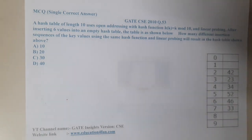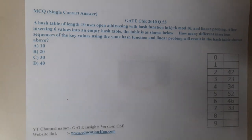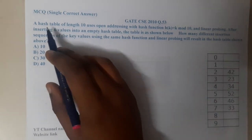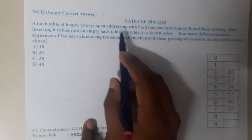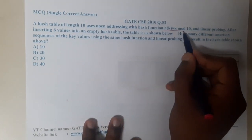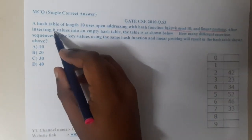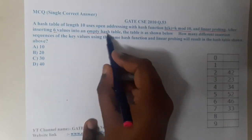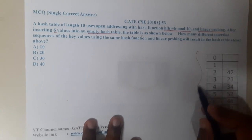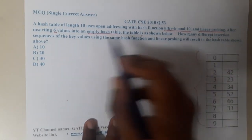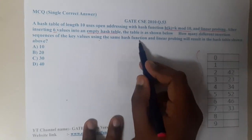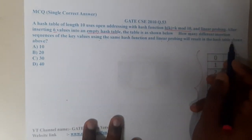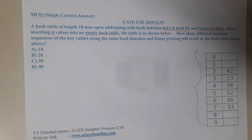Hello guys, we are back with our next lecture. In this lecture, let us go through the next question — GATE CSE 2010 question 53. A hash table of length 10 uses open addressing with hash function h(k) = k mod 10 using linear probing. After inserting six values into an empty hash table, the table is shown below. How many different insertion sequences of the key values using the same hash function and linear probing will result in the hash table shown?